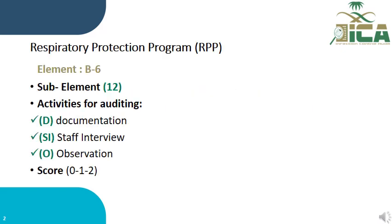The total number of elements is 12, and activities for auditing are document, interview, and observation. The score will be 0, 1, or 2.